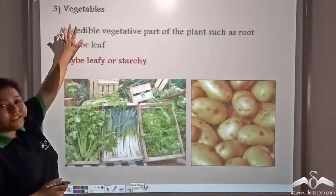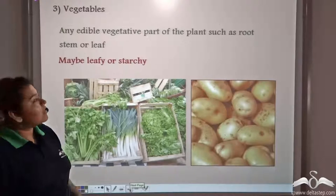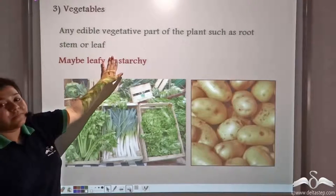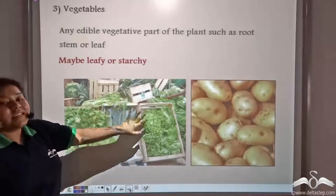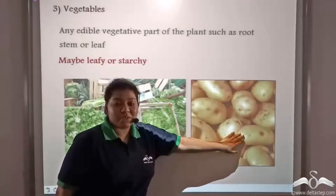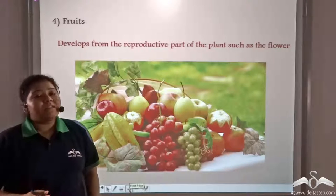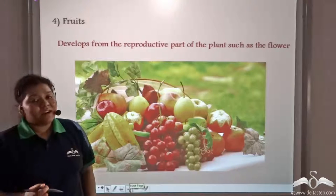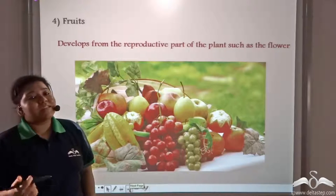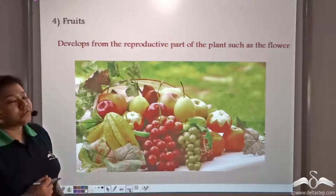Other food crops are vegetables, which are any edible parts of the plant like the roots, stems, or leaves. Vegetables can either be leafy or starchy, like potatoes. The reproductive part of the plant is the flower, and the flower in future develops into fruits. Fruits are another variety of food crops.